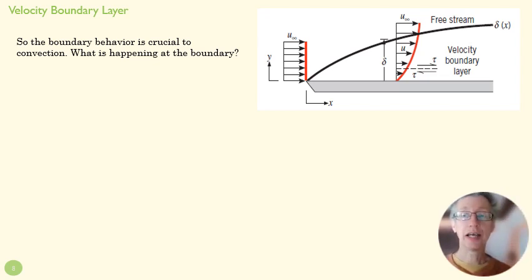All right, so let's take a little look at what's going on at the boundary layer, because that's so important to what's happening with convection. And to understand that, we need to talk both about the velocity boundary layer and the thermal boundary layer.